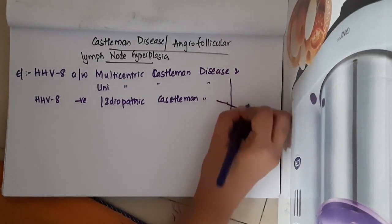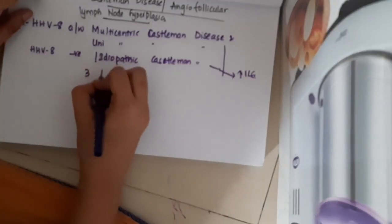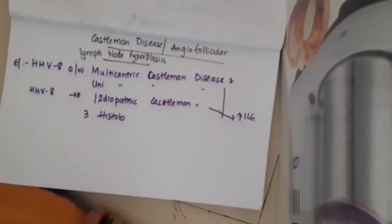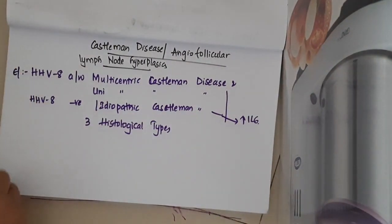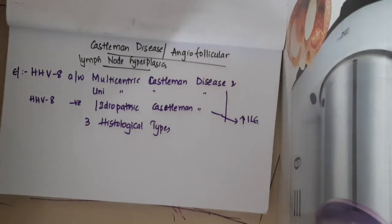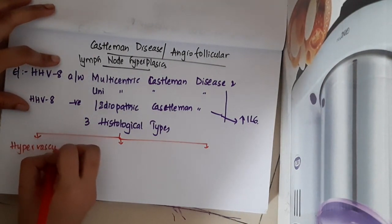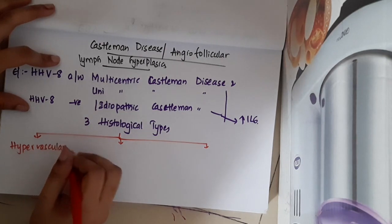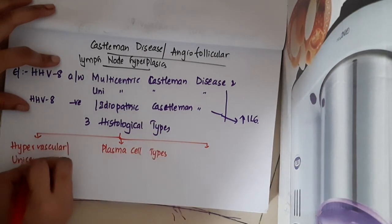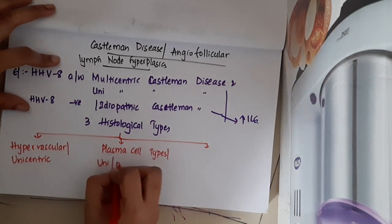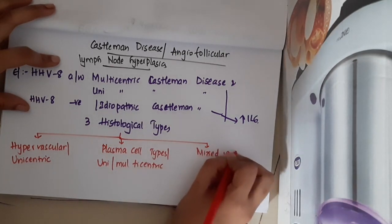In both these diseases there is increased interleukin. There are three different histological types of Castleman disease: hypervascular type, which is unicentric; plasma cell type, which is uni- or multi-centric; and mixed variant, which is multi-centric.